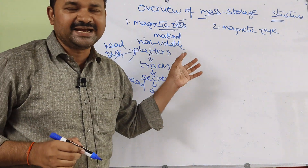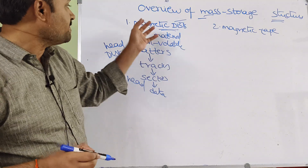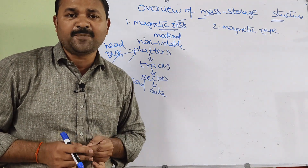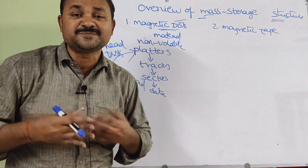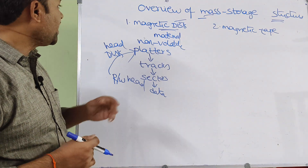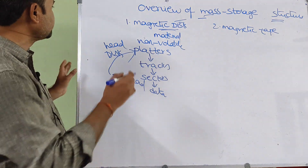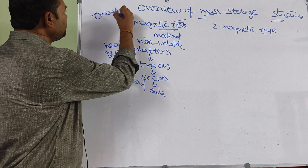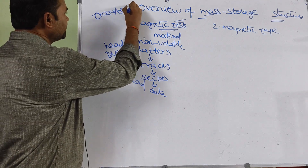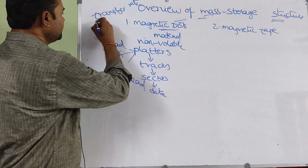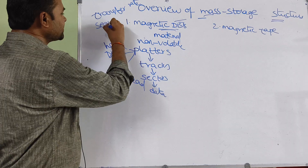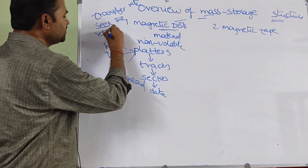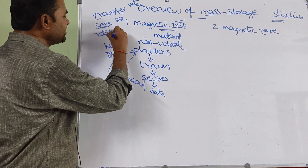Now let us analyze the hard disk performance using performance parameters. We have three performance parameters: the first is transfer rate, the second is seek time, and the third is rotational latency.